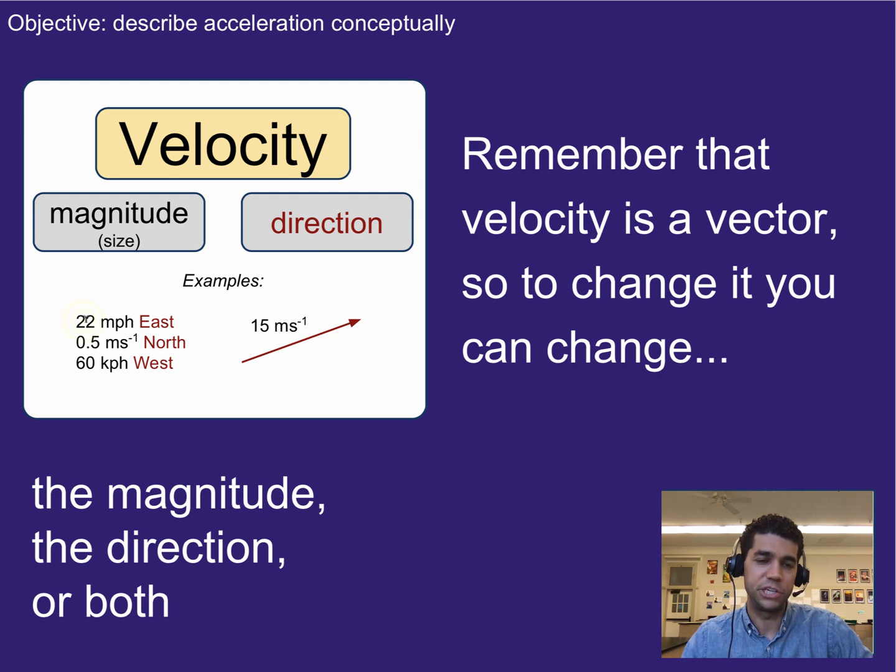For example, we could be changing the size of the velocity, so from 22 miles an hour to 44 miles an hour. We could be changing the direction of the velocity from east to west, while still staying at 22 miles an hour. Or we can be changing both of those things at the same time. All of those are a form of acceleration.